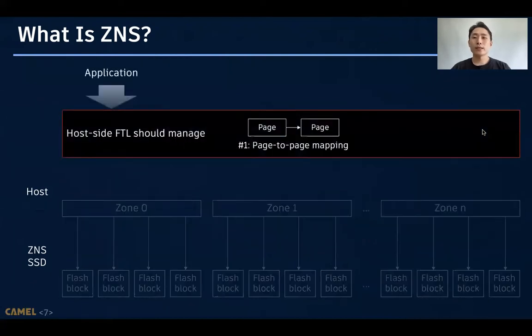To obey the constraints, host-side FTL needs to manage some tasks which were originally performed in SSDs. First, it should manage the page-to-page mapping to convert random access into sequential. It also needs to perform garbage collection to erase invalid data generated from out-of-place updates. Then, what's the benefit of ZNS?